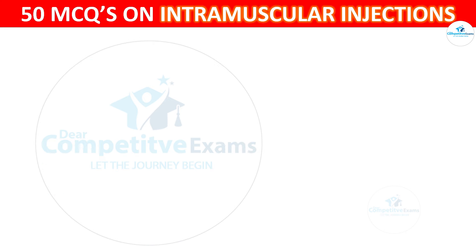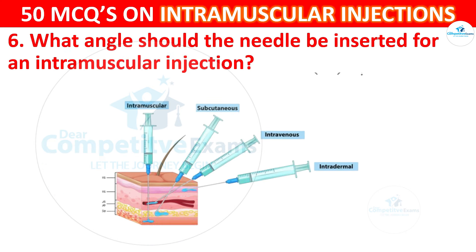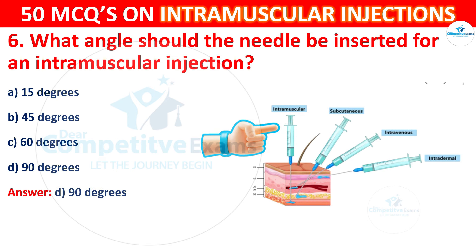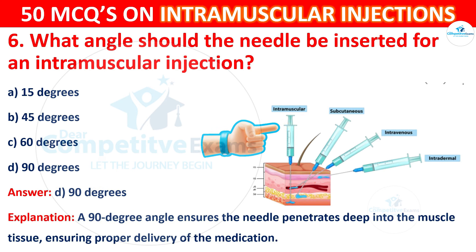Question 6: What angle should the needle be inserted for an intramuscular injection? Options are: 15 degrees, 45 degrees, 60 degrees, or 90 degrees. The correct answer is D, 90 degrees. A 90-degree angle ensures the needle penetrates deep into the muscle tissue, ensuring proper delivery of the medication.